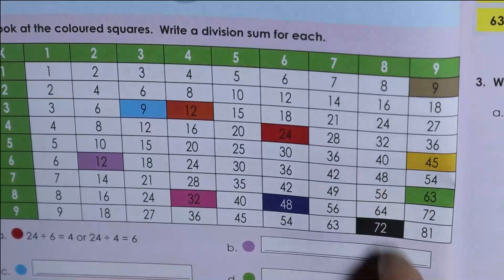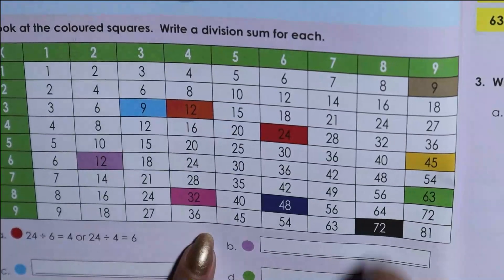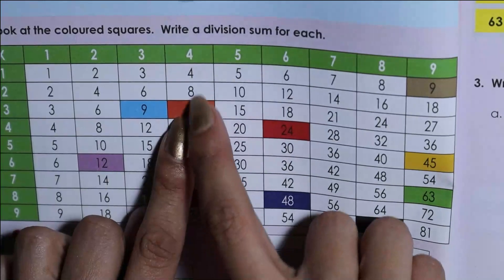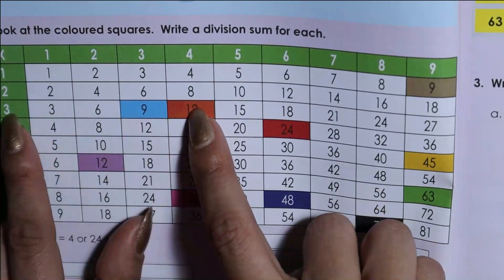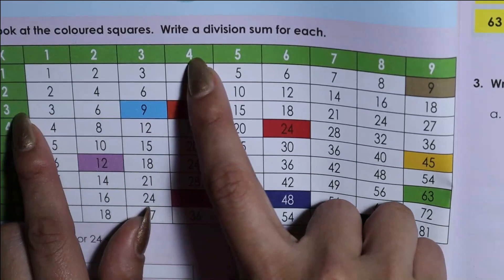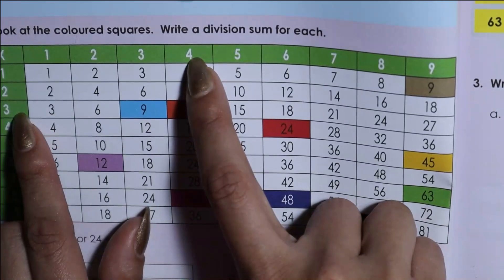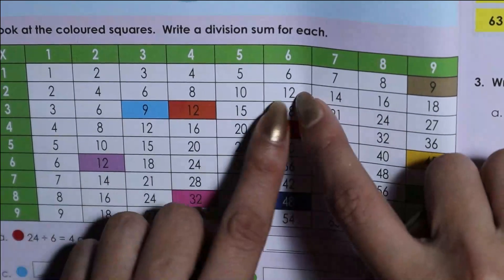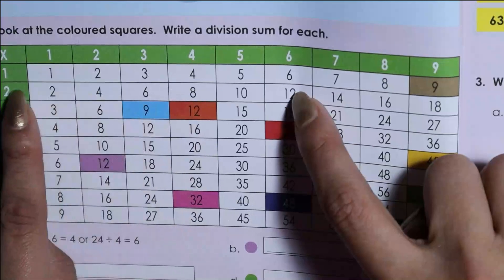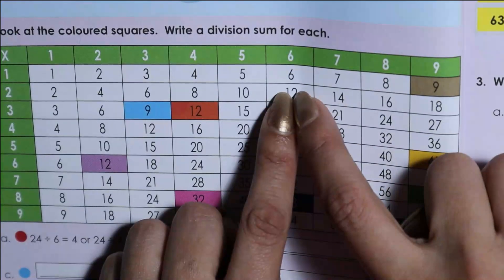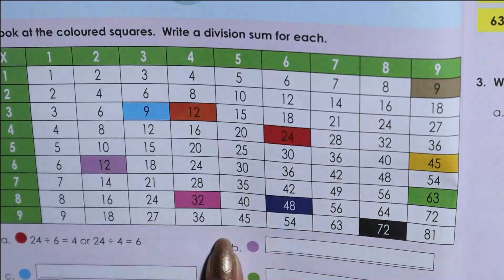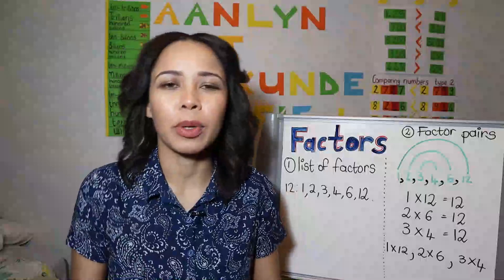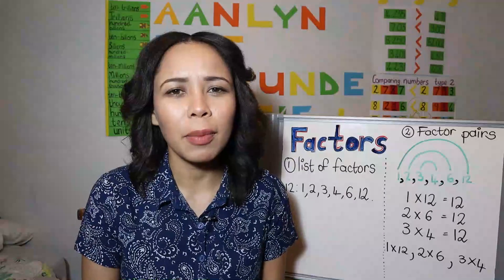Let me show you quickly how it works when you use this number grid to find your factors. So if I'm looking for all the factors of 12, where do I see the number 12? There's the number 12 — what numbers make up 12? 4 times 3, so 4 and 3 are factors of 12. Where else do I see a 12? There — so 6 and 2 are factors of 12. You look for the number and then ask: what are the factors?